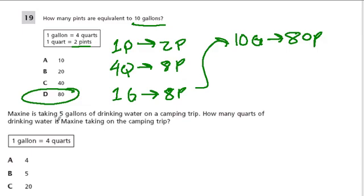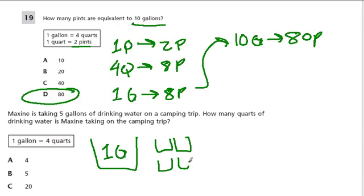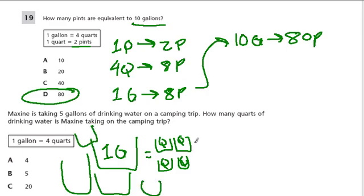Maxine is taking five gallons of drinking water on a camping trip. How many quarts is that? Every one gallon is four quarts — here's one big gallon, and that equals one, two, three, four quarts. If I have five gallons, five times as many of these, each gallon is four quarts. So we have five groups of four quarts, or 20 quarts.